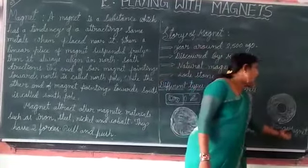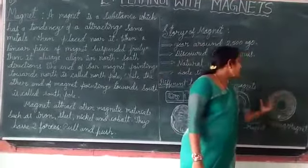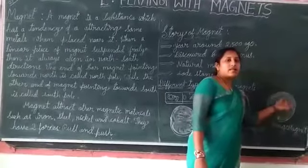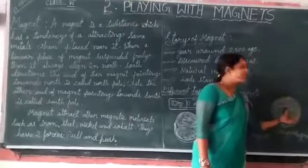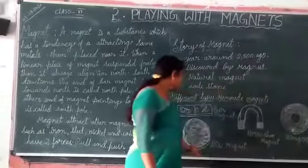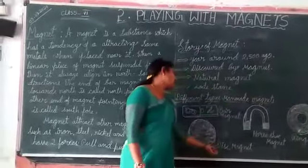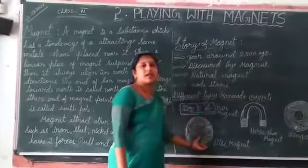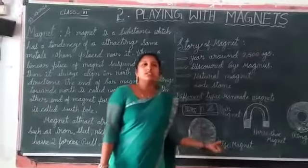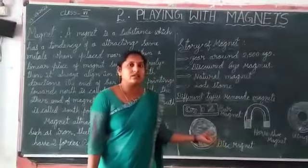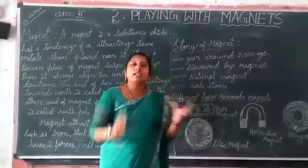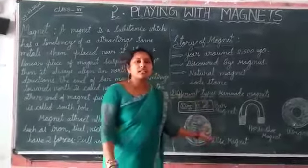Another type is the ring magnet. In the middle you can see a small hole with the magnet around it — that is the ring magnet. And another one is the disc magnet. It is a small, round-shaped magnet.